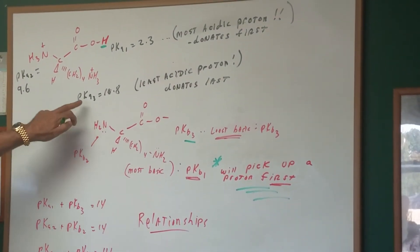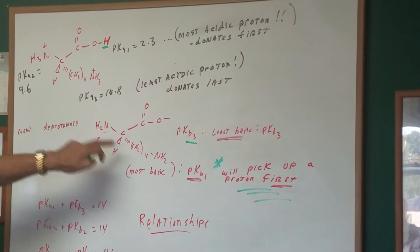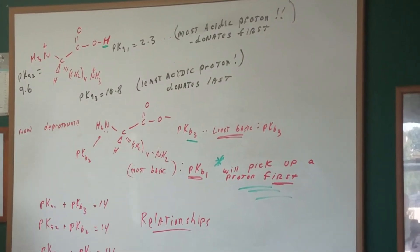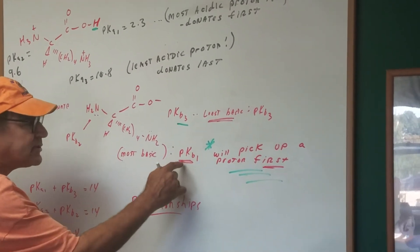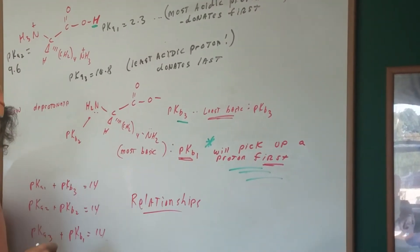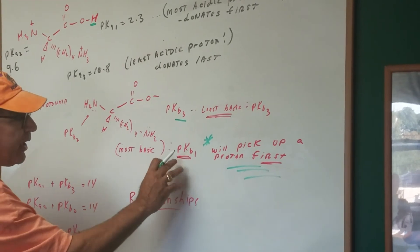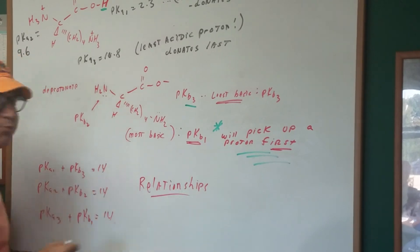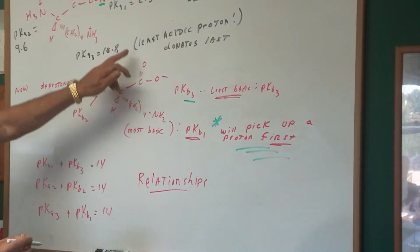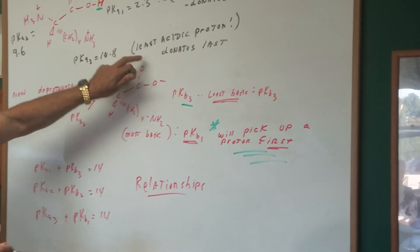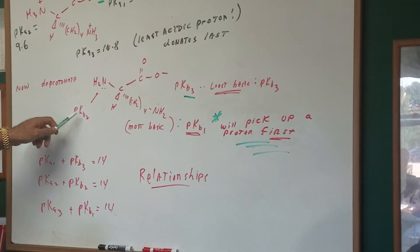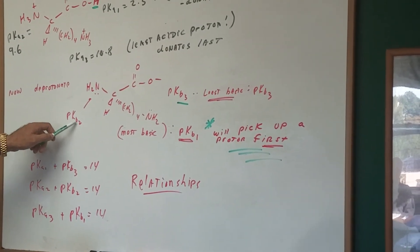Now let's come from the other side. This was the least acidic, so now it would be the most basic, and that's where it gets tricky. Since it's the most basic, I'm going to assign it as PKB1. That would mean that it will pick up the proton first since it was the least acidic. Now it's the most basic, and therefore, by default, this one would be our PKB2.